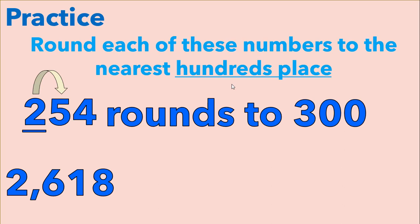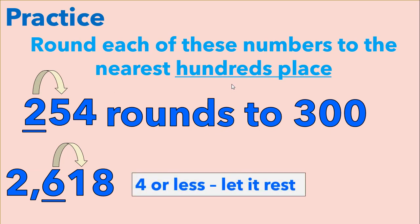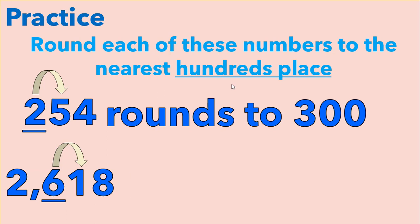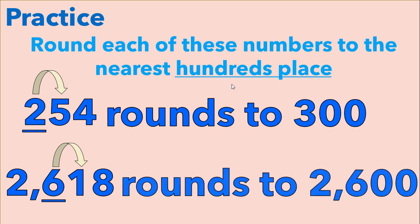Here, two thousand six hundred eighteen — the six is in the hundreds place. We're going to look at the one in the tens place to determine if we're going to round to two thousand six hundred or two thousand seven hundred. We can see the one falls in the category of four or less, so we're going to let the six rest, meaning that we're going to round two thousand six hundred eighteen to two thousand six hundred.